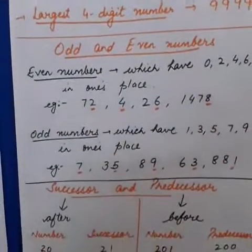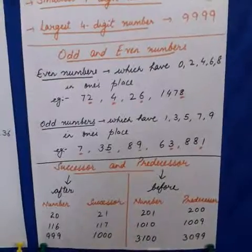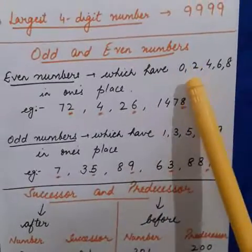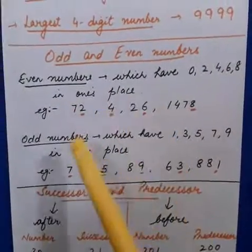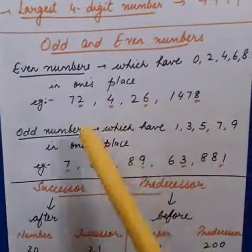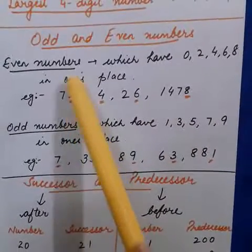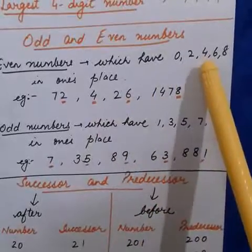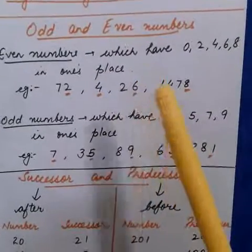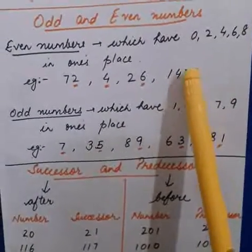Now, what are odd and even numbers? Even numbers are those numbers which have 0, 2, 4, 6, or 8 in the 1's place. For example: 72, 4, 26, 1478. All these numbers have an even digit in the 1's place. In 72, the ones digit is 2 — even. In 4, ones digit is 4 — even. In 26, ones digit is 6 — even. In 1478, ones digit is 8 — even. So the complete number becomes an even number, irrespective of any other digits.